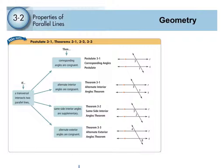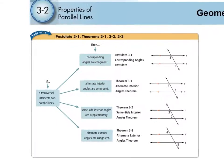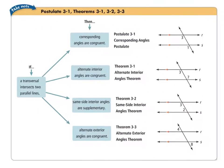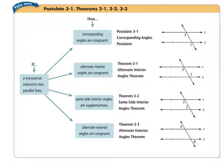So today in section 3-2, we again deal with our angle pairs we learned yesterday in 3-1, but now it's a special scenario. Now they are formed when a transversal intersects two parallel lines — not just any two lines, but specifically two parallel lines.